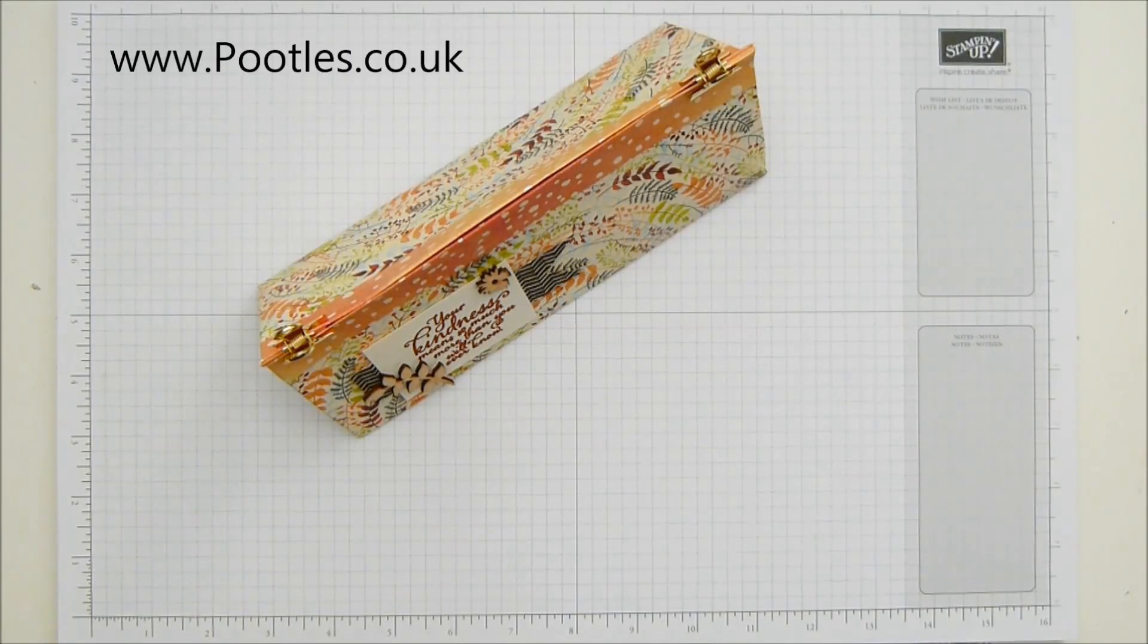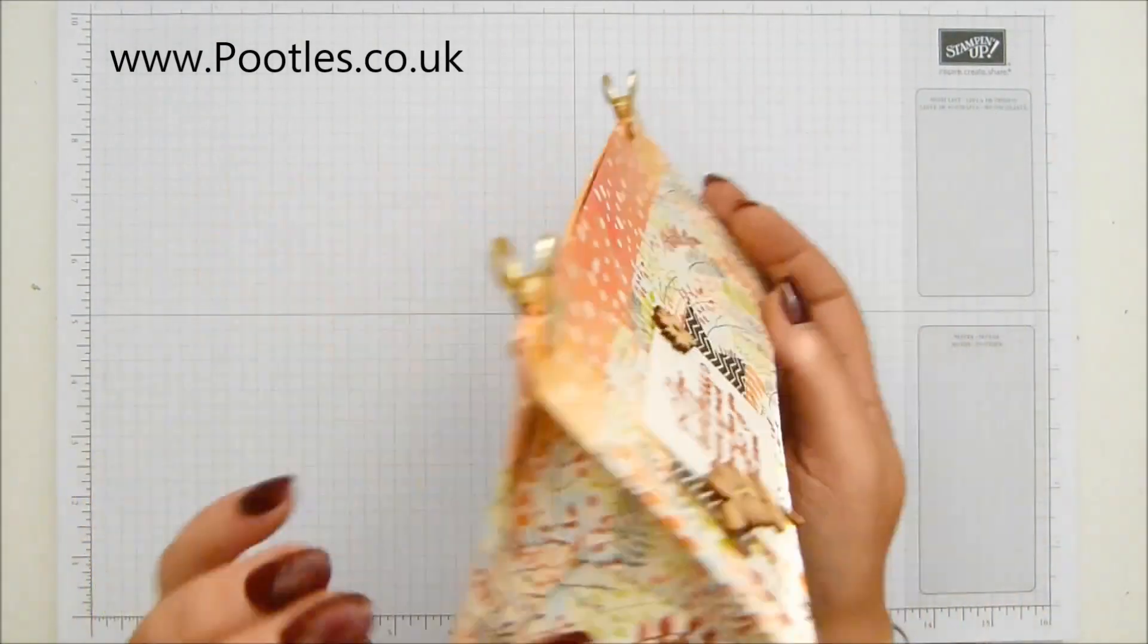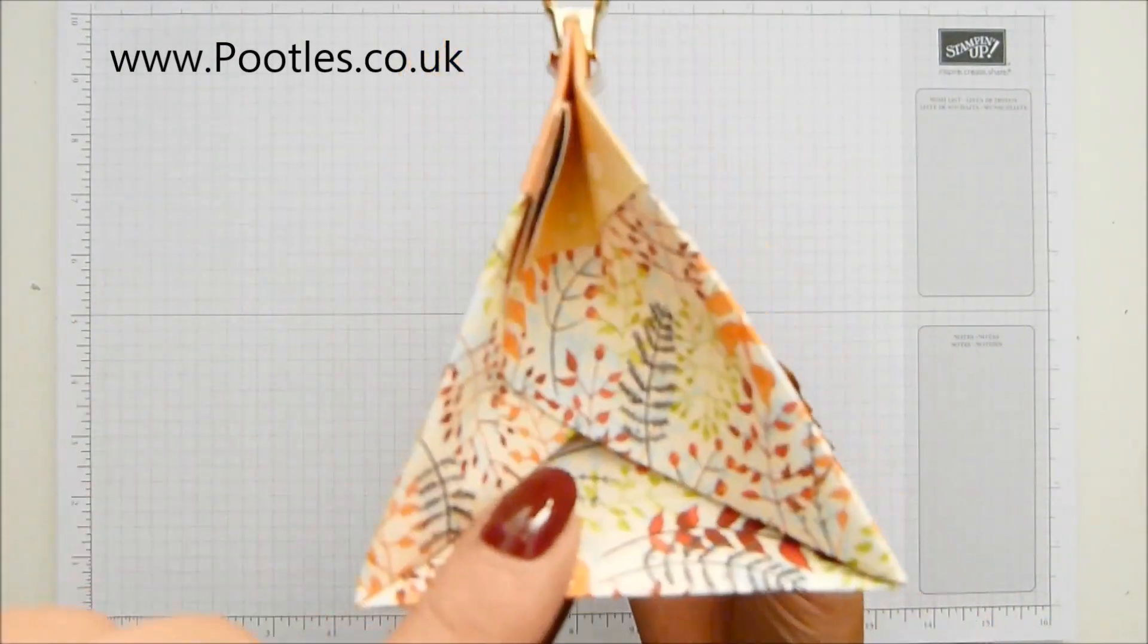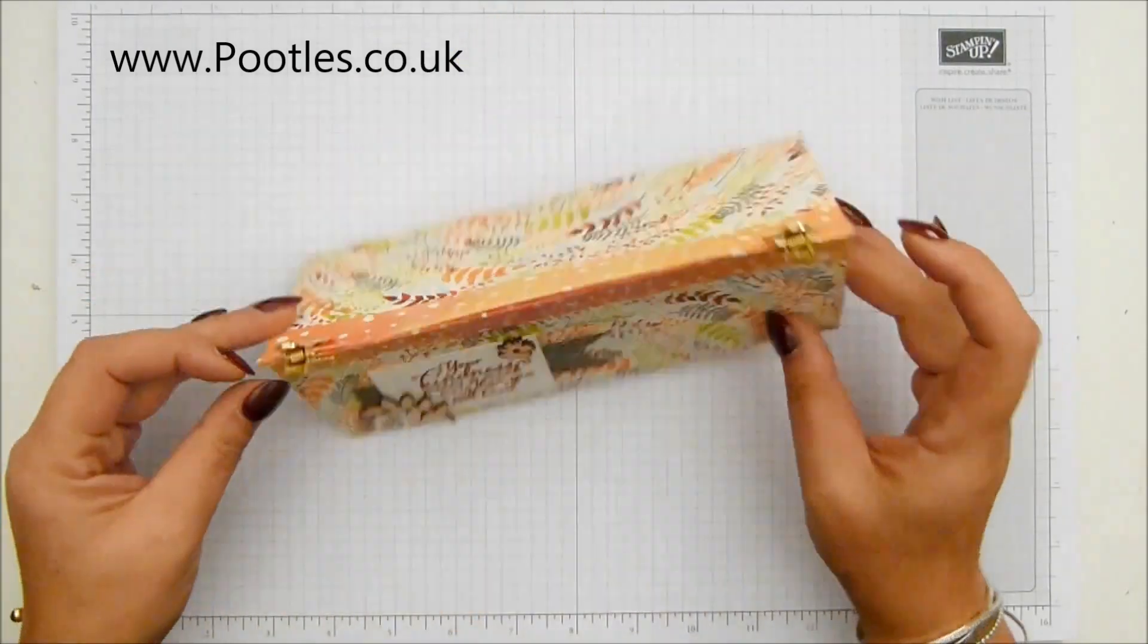Hi there, it's Sam from Poodles.co.uk. Thank you very much for joining me today. Today's project is this one. It's a triangular bag with a really quite cute close inside. Really quite sweet.